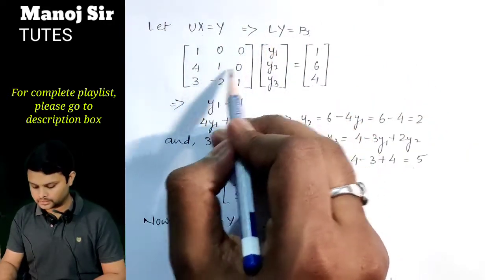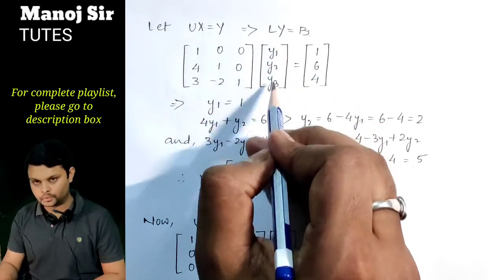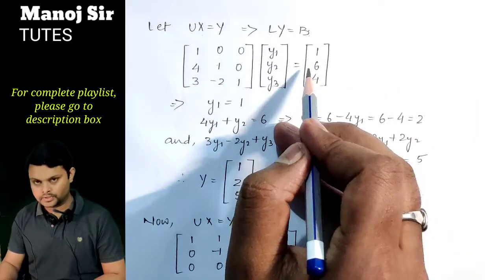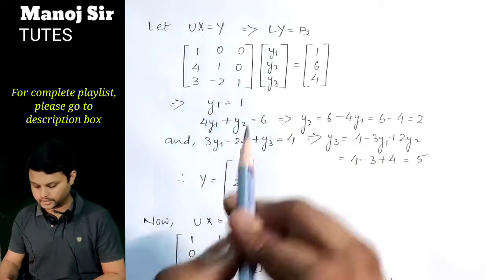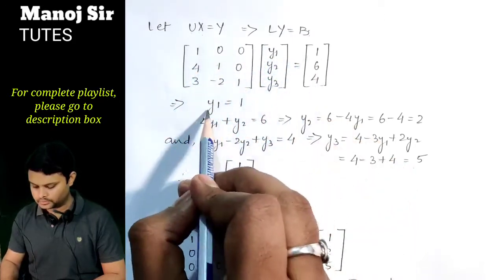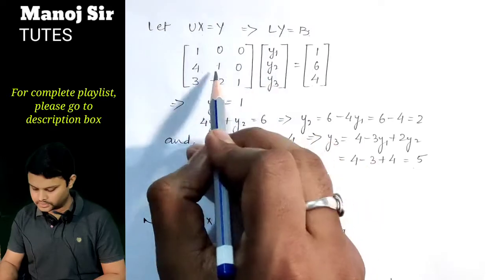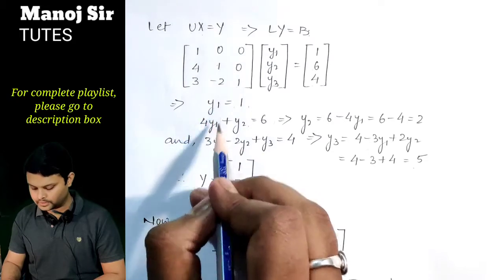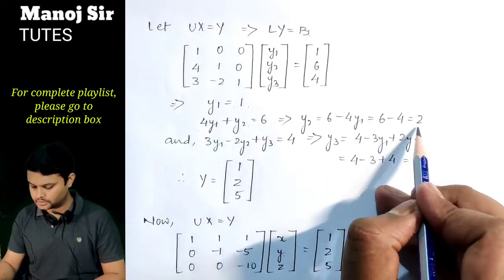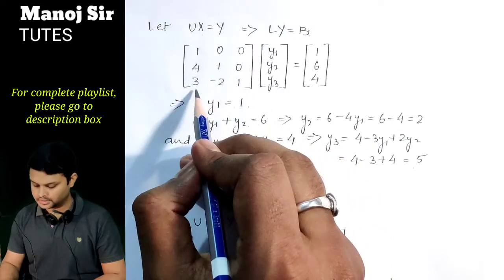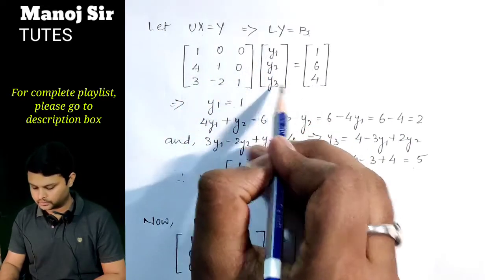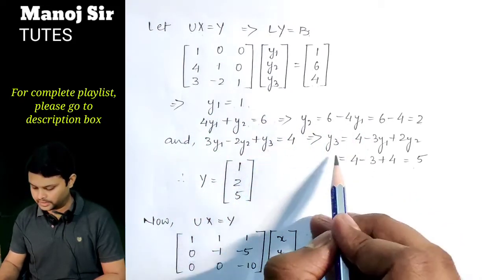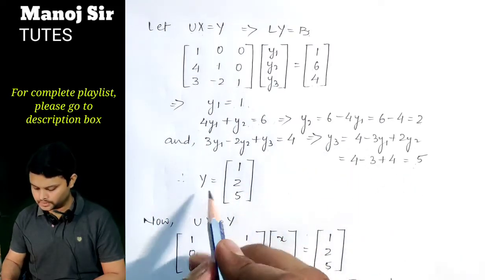From L·Y = b with Y = [y1, y2, y3] and b = [1, 6, 4]: the first equation gives y1 = 1. The second equation, 4·y1 + y2 = 6, substituting y1 = 1 gives y2 = 2. The third equation, 3·y1 − 2·y2 + y3 = 4, substituting y1 = 1 and y2 = 2 gives y3 = 5. So Y = [1, 2, 5].